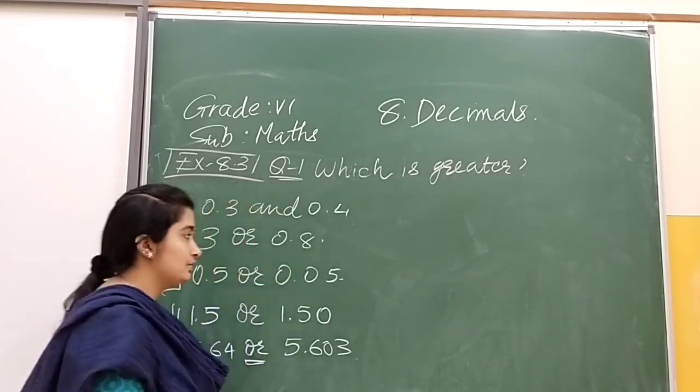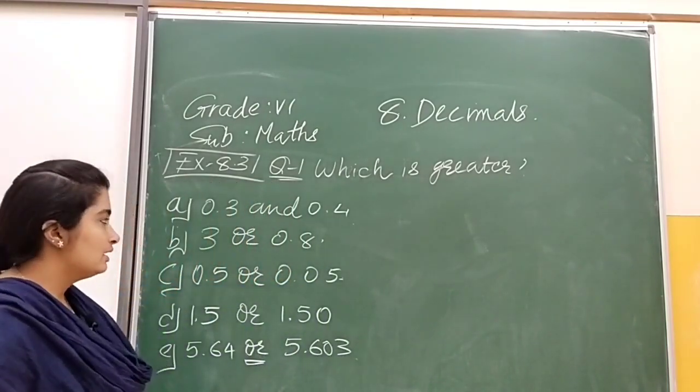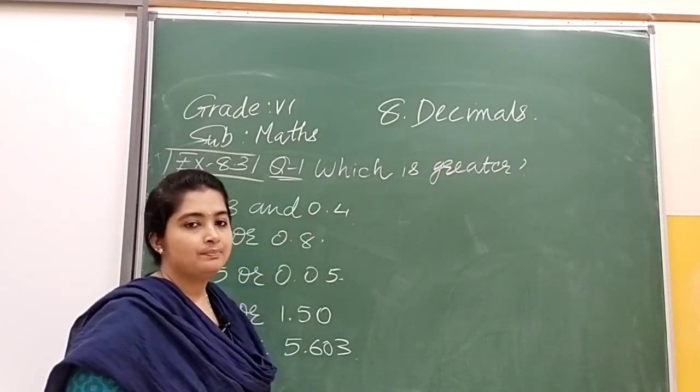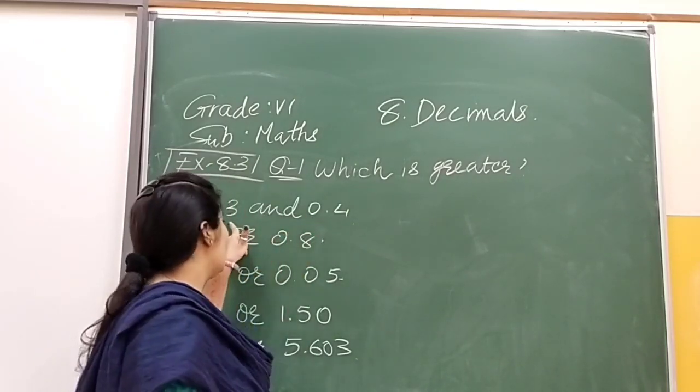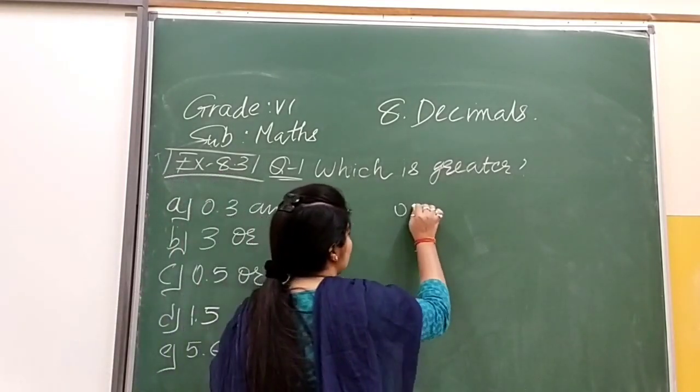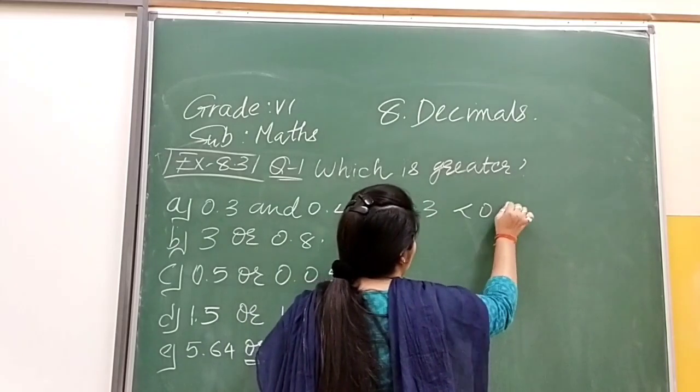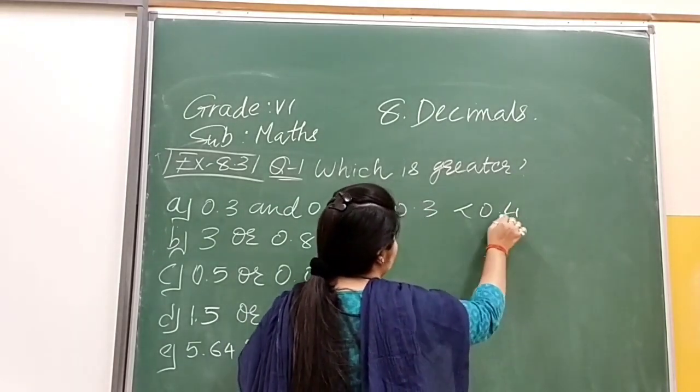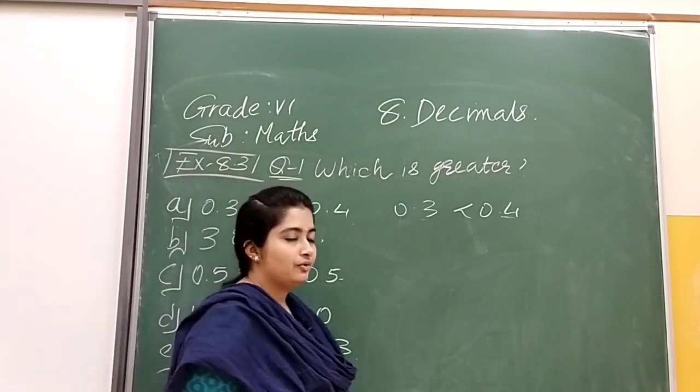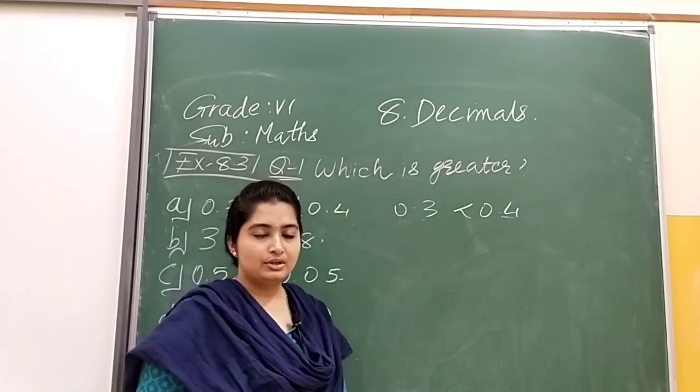Here the first one is 0.3 and 0.4. The ones place is the same in both. The tenths place, here it's 3 and here it's 4. So we can easily compare 0.3 and 0.4, which number is greater? That will be 0.4, because 4 is greater than 3, so 0.4 is greater than 0.3.